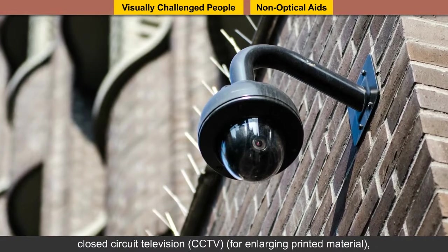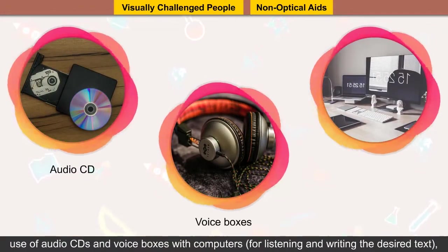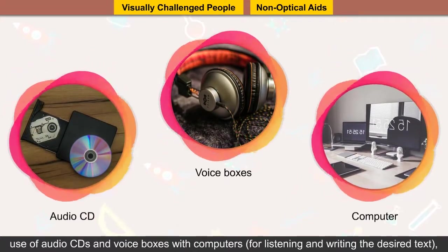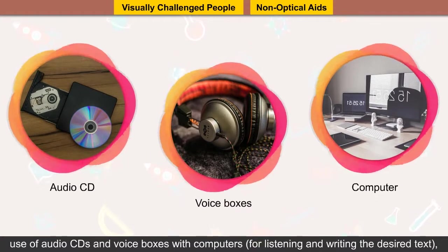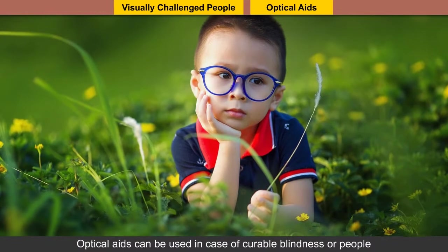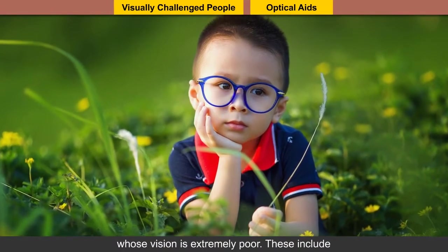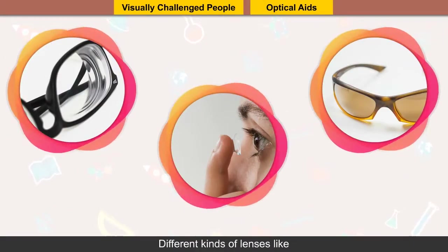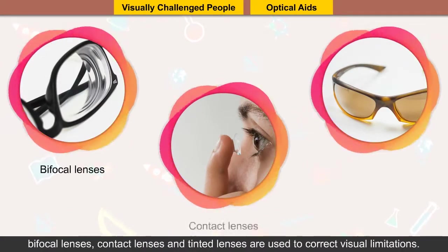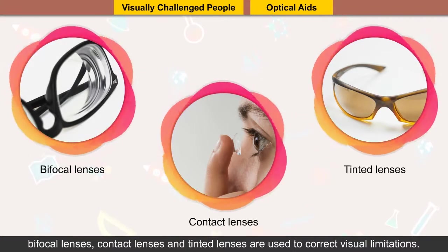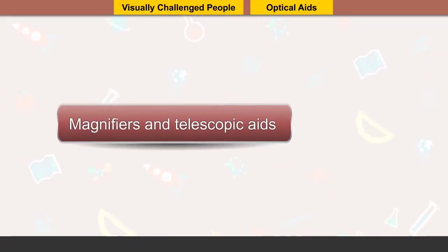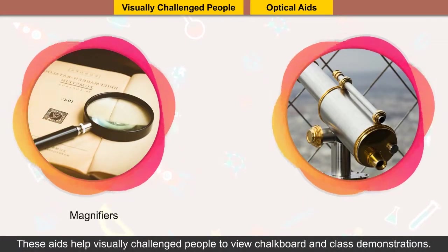Use of audio CDs and voice boxes with computers for listening and writing desired text are also included in this category. Optical aids can be used in case of curable blindness or for people whose vision is extremely poor. These include different kinds of lenses such as bifocal lenses, contact lenses, and tinted lenses to correct visual limitations. Magnifiers and telescopic aids help visually challenged people to view chalkboards and class demonstrations.